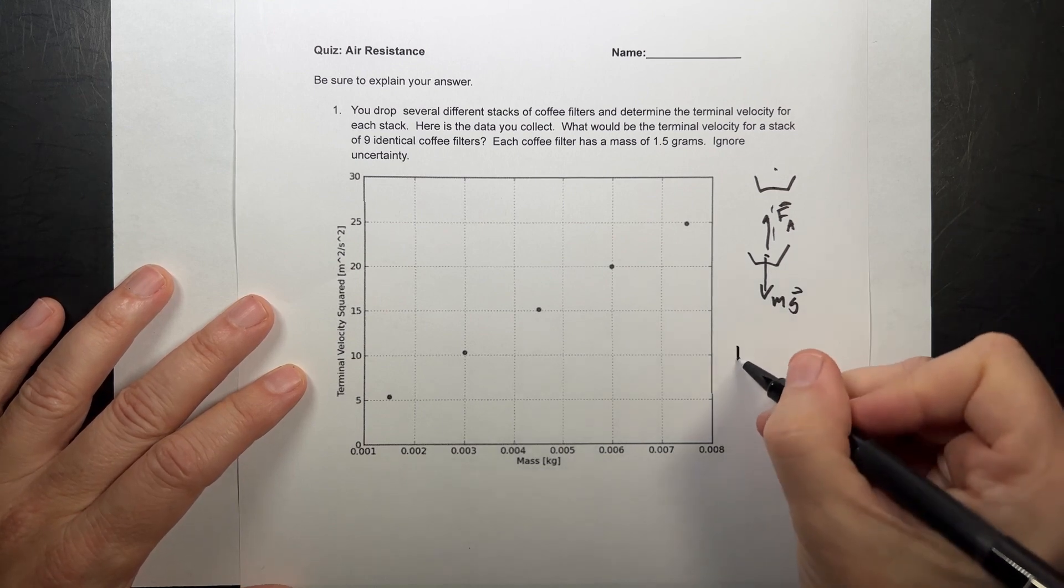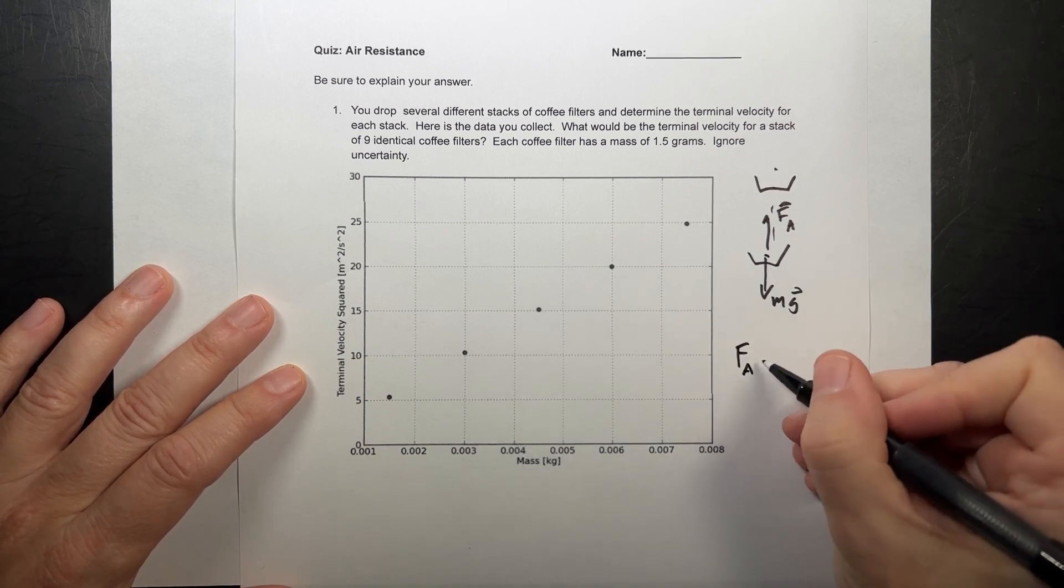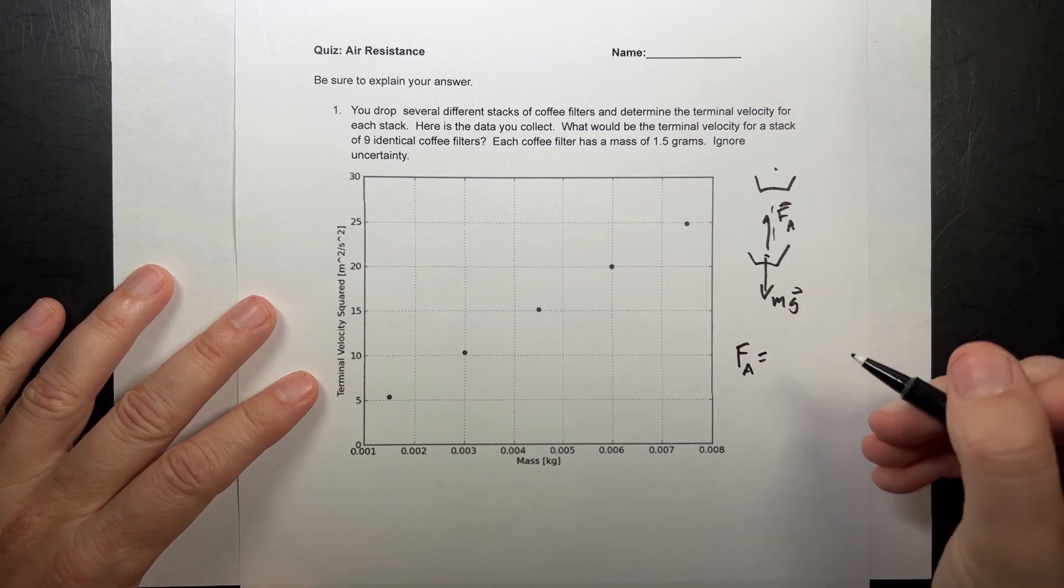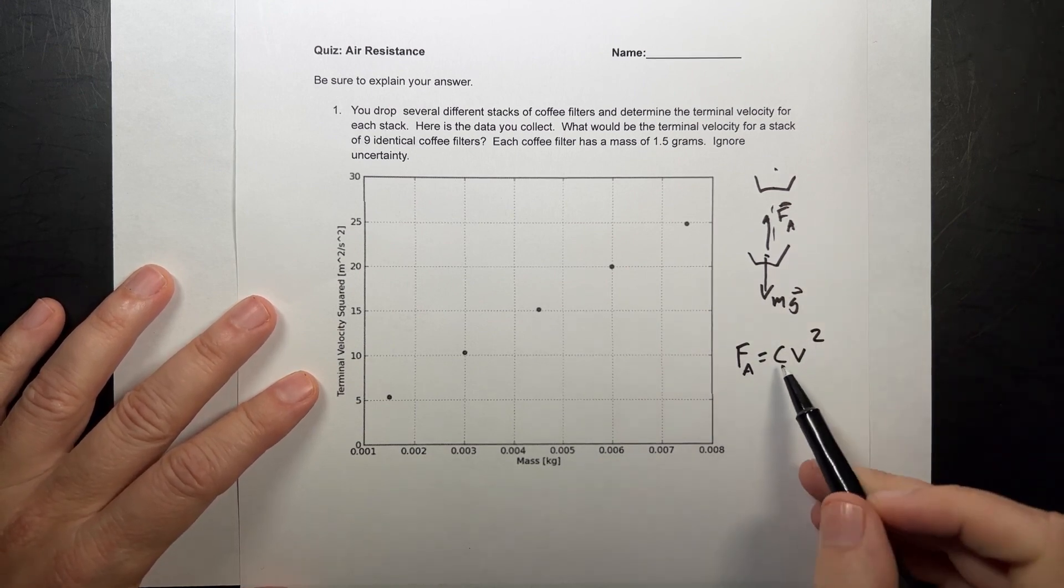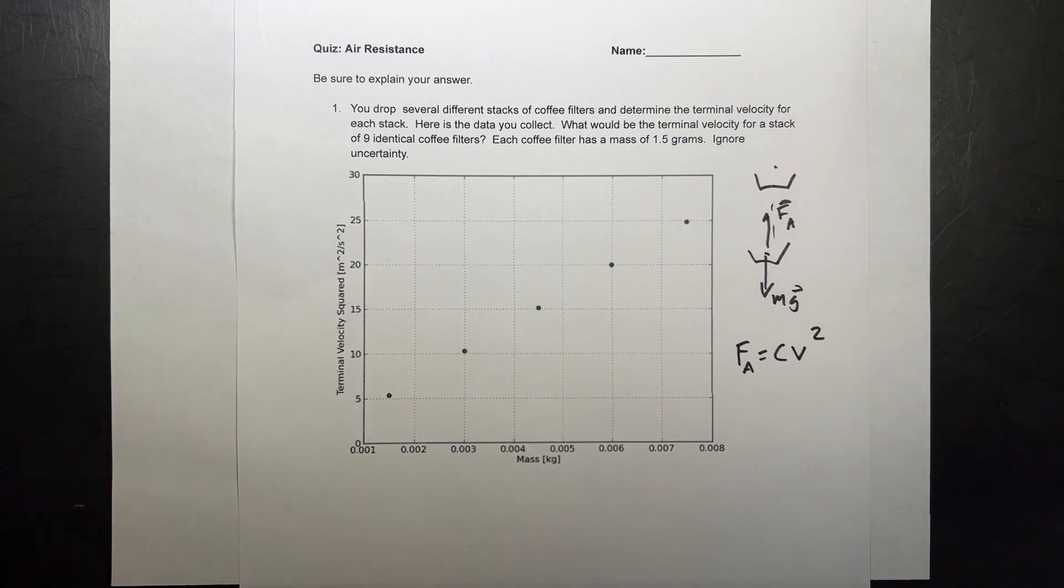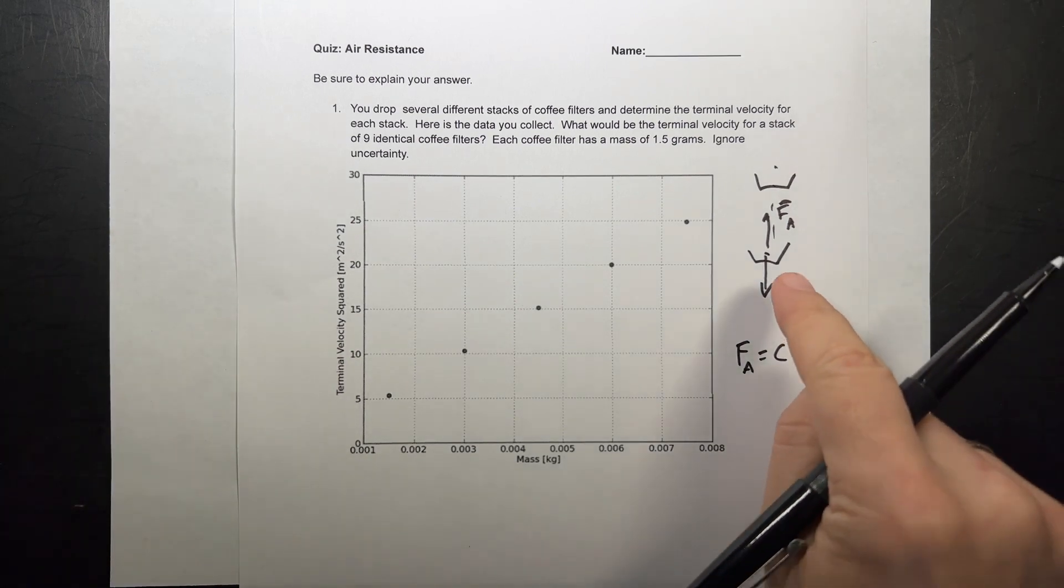In this particular lab, we were modeling the air resistance force, the magnitude, as some constant. I'm just going to call it C times V squared, where that's a drag coefficient and all the density of the air and the shape and all that stuff.